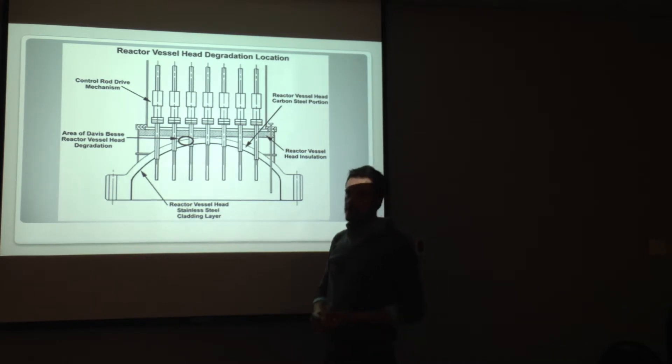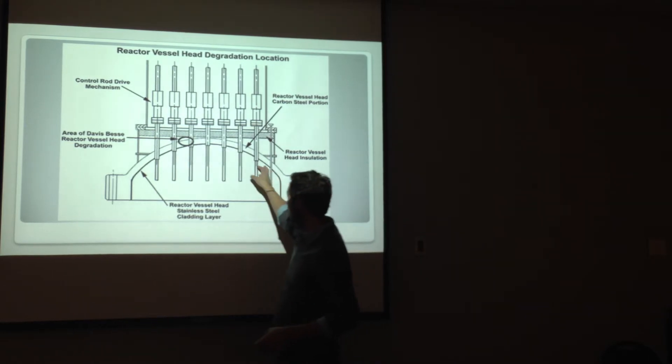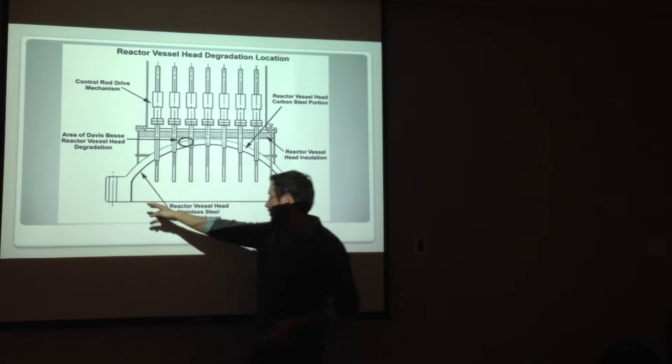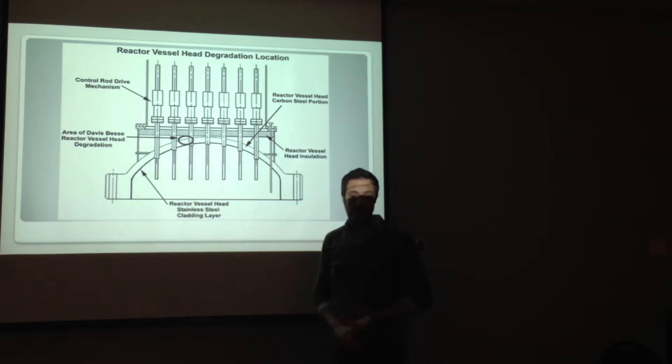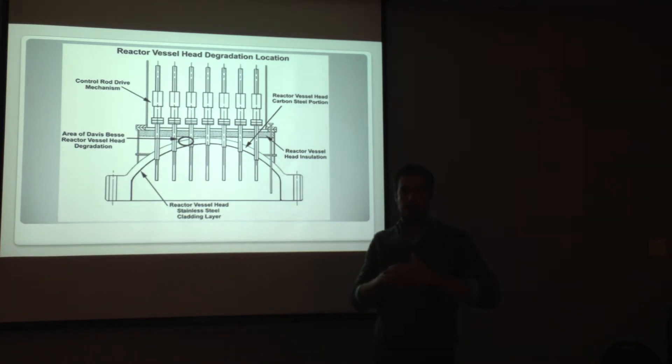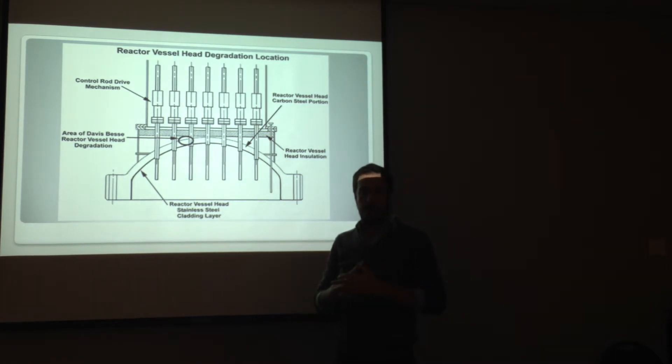And subsequent ultrasonic testing, eddy current testing, stuff like that that's non-invasive and non-visual wasn't done far enough down to indicate that there was leakage there. So, inside this primary system there's this layer right here, this black line of stainless steel cladding. It's only about three-eighths an inch thick but it's basically a boundary in between the primary water and that carbon steel to prevent the boric acid from corroding.